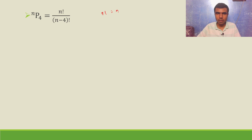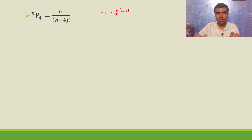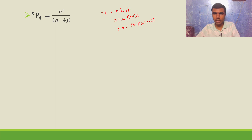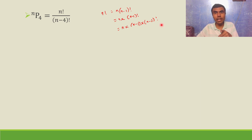There is a property: n factorial is nothing but n into n minus 1 factorial. To make it more clear, n into n minus 1 factorial, and n minus 1 factorial we can write as n minus 1 into n minus 2 factorial. Again, n minus 2 factorial is n minus 2 into n minus 3 factorial.